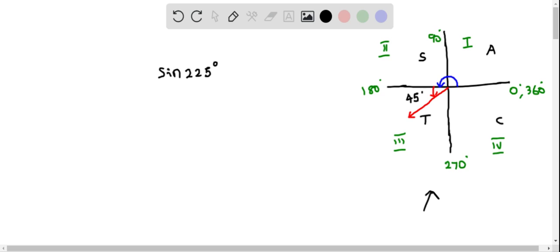In the third quadrant, tangent is positive, and in the fourth quadrant, cosine is positive. So we should know about this information. First, I'm going to rewrite this.